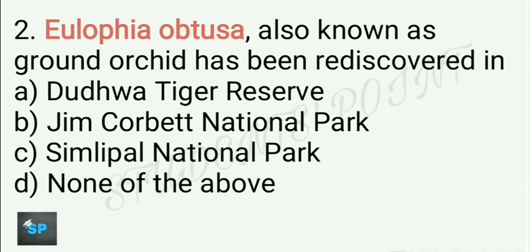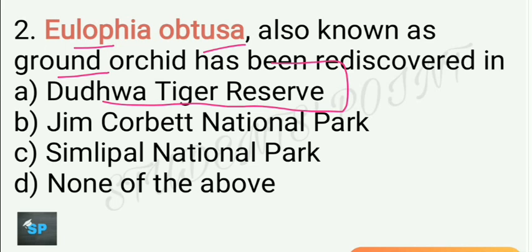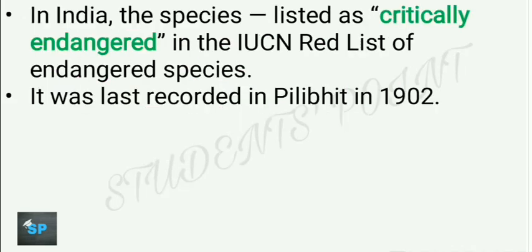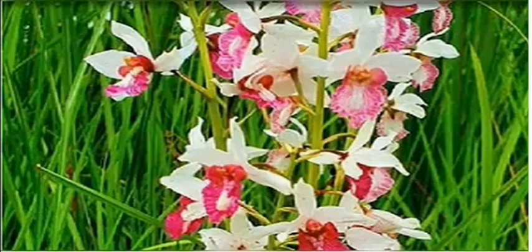The next question: Eulophia obtusa, also known as ground orchid, has been rediscovered in Dudhwa National Park in Uttar Pradesh, so A is the right answer. In India the species has been listed as critically endangered in the IUCN Red List of Endangered Species. It was last recorded in Pilibhit in 1902.